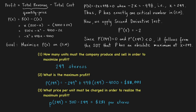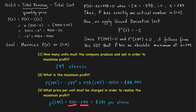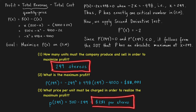Lastly: what price per unit must be charged to realize the maximum profit? Our price function is 500 minus X. Evaluating at X = 249 gives 500 minus 249, which equals $251 per stereo. In summary, the company must produce 249 stereos and sell them at a price of $251 per stereo in order to realize the maximum profit of $58,001.